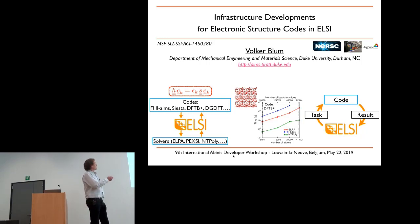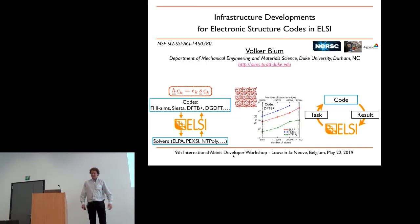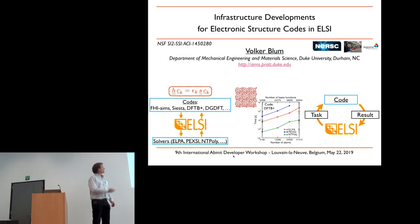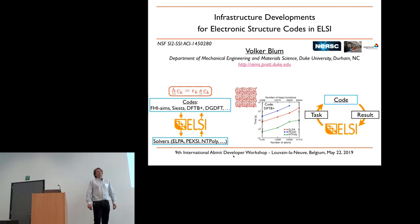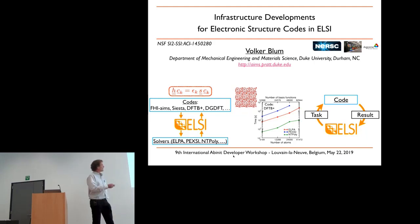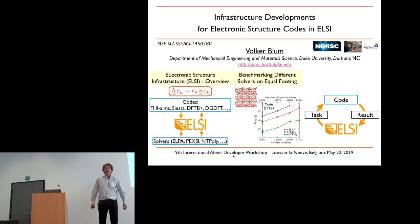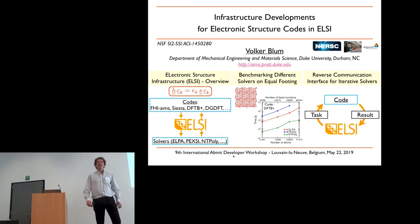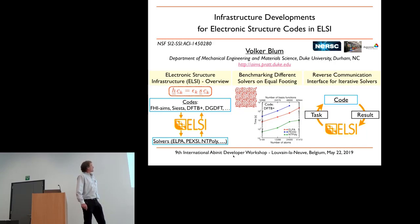The title of the talk is 'Infrastructure Developments for Electronic Structure Codes in ELSI' — that's the Electronic Structure Infrastructure. My name is Volker Blum, and these days I'm apparently a mechanical engineer because I'm in the Department of Mechanical Engineering and Material Science at Duke University in North Carolina. I will try to cover too many things, so I may fall off the edge of time.